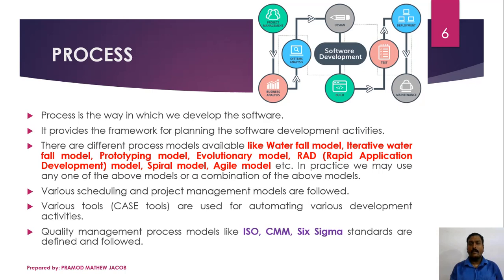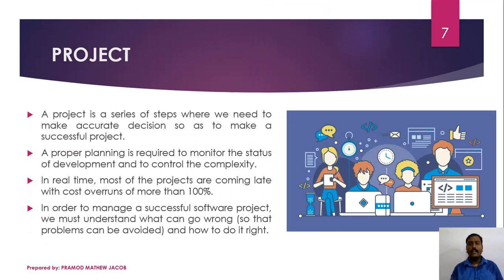Ultimately, the product will be accepted only based on its quality, so we must use some software quality management process like ISO standards, Capability Maturity Model (CMM), or Six Sigma standards. The last factor is the Project, which is the series of all the activities and processes performed to make the product a successful one.